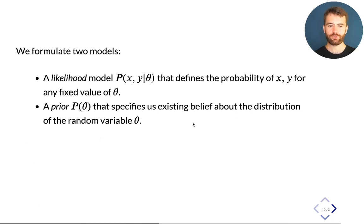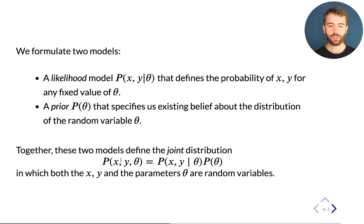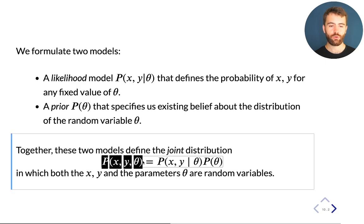In order to define a model that can be used within the Bayesian approach, we have to define two components: a likelihood model of this form, which defines a probability over x and y given theta — the same kind of model we worked with earlier — and a prior, which specifies our initial belief about the distribution before we see any data. By multiplying these, we form the joint distribution over all the variables, and now we have a probability over theta.